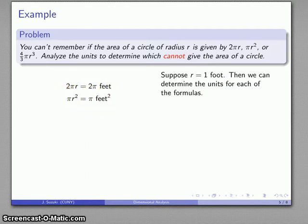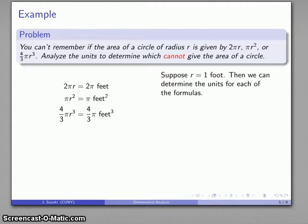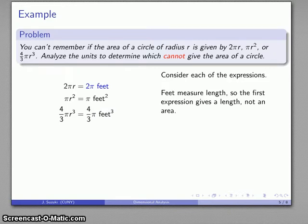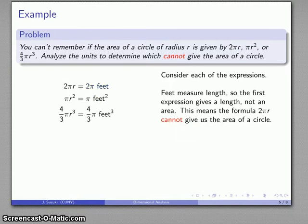That expression 4/3πr³—r is one foot, so when I cube it, one foot cubed. 4/3 and π have no units, so the units of this expression will be feet cubed. Now I'll take a look at each of these expressions. Feet is a unit of length, so whatever this first expression measures is a length, not an area, so I know that first expression cannot possibly be the formula for the area of the circle.